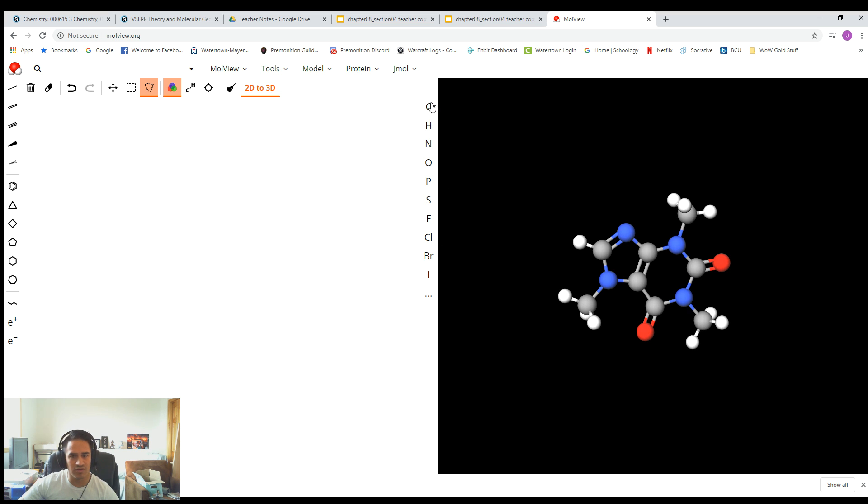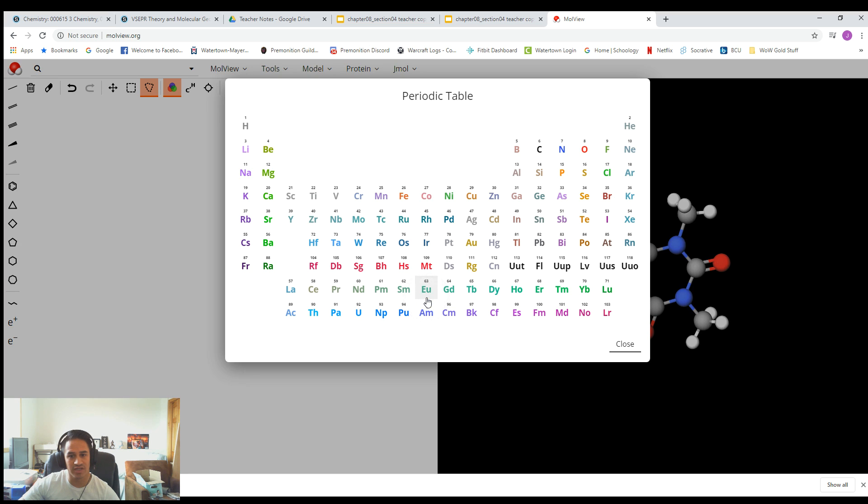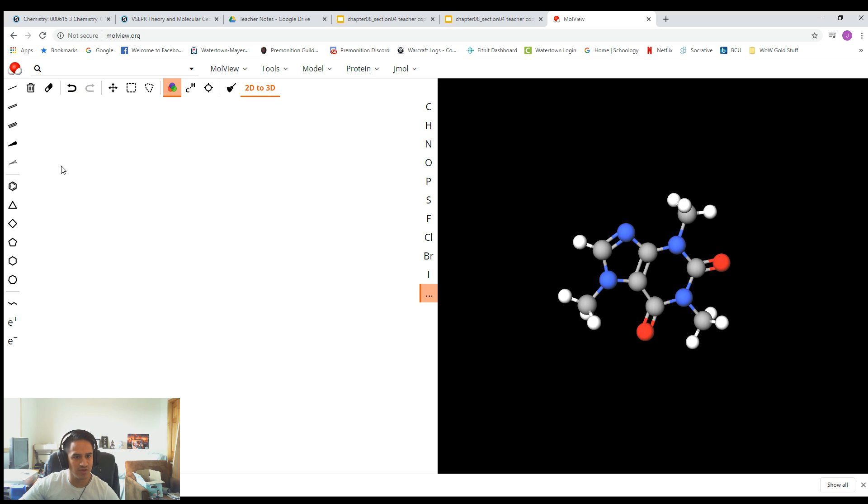On the right here are all the different elements, or at least some of them that you can use. If there's one that you want to use that isn't on here, I believe you click on the little three dots. It brings up the whole periodic table, so you can bring up a metal, like sodium, for example. And then if you click on the canvas, it'll just put sodium down. So by default, there's already some on here on the side.